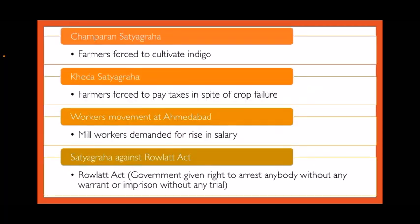Now let's see the different Satyagrahas that Mahatma Gandhi undertook. The first is the Champaran Satyagraha. Champaran is in Bihar. Here the farmers were forced to cultivate indigo and had to sell it at a fixed price. Gandhiji went to Champaran in 1917 and launched agitation by following the way of Satyagraha. This first struggle in India became successful and the farmers were given justice.